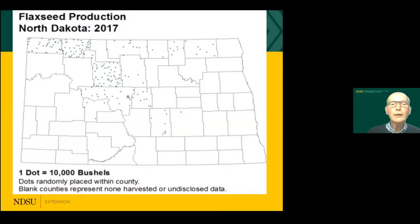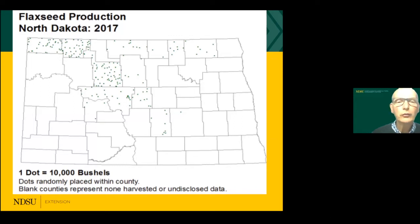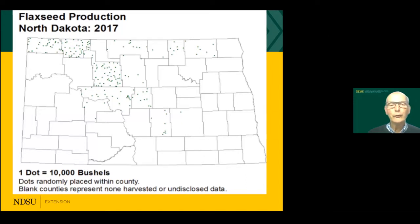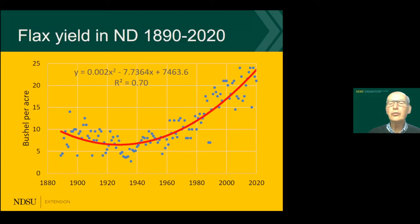Looking at North Dakota, most of the flax is grown in the northern tier of the state, especially in the northwest corner. It is one of our northern crops — it is a cool season crop.